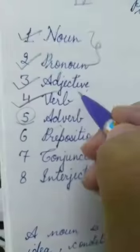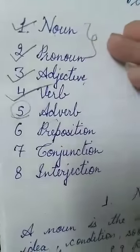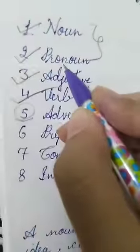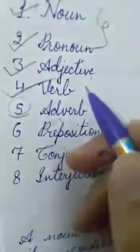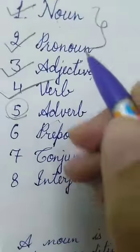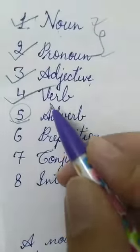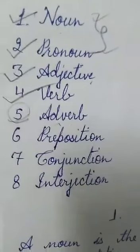We have completed noun, pronoun, adjective, and verb. What is noun? Noun is the name of anything — name of each and everything. Pronoun: we use pronoun instead of noun. What is adjective? Adjective tells us the quality of noun and pronoun. And what is verb? Verb covers all the action words or all the stative words.